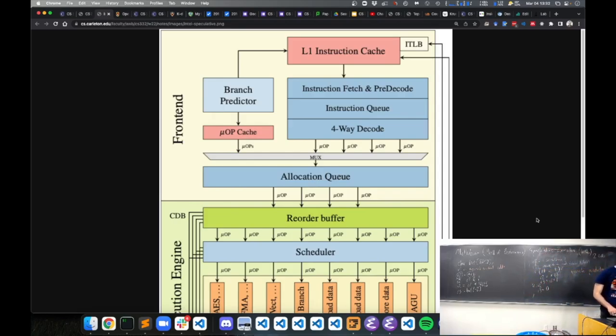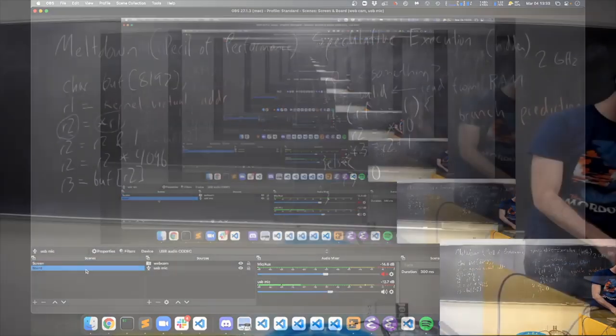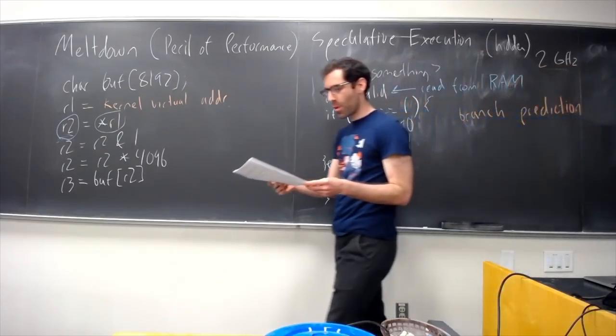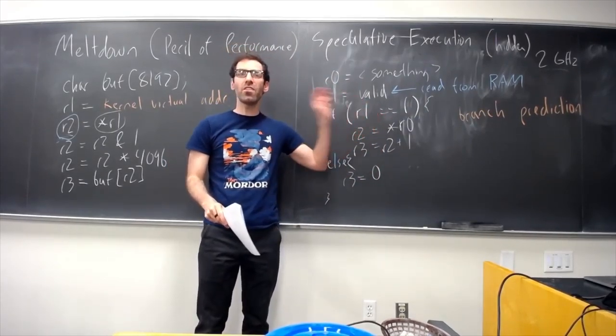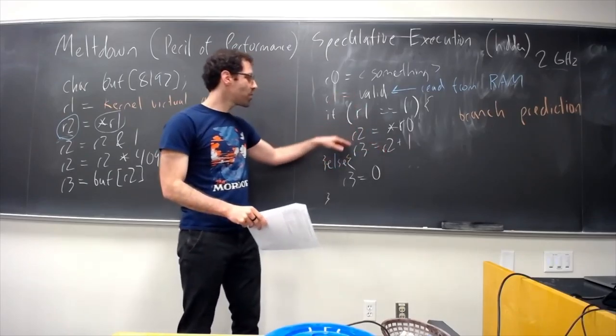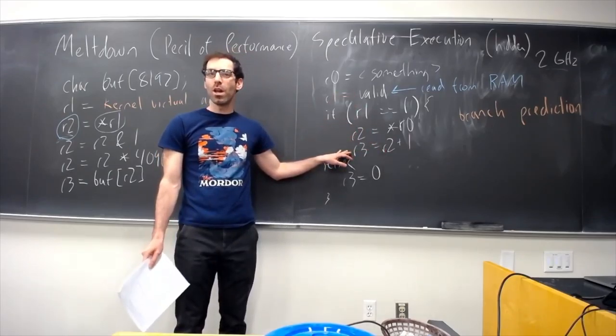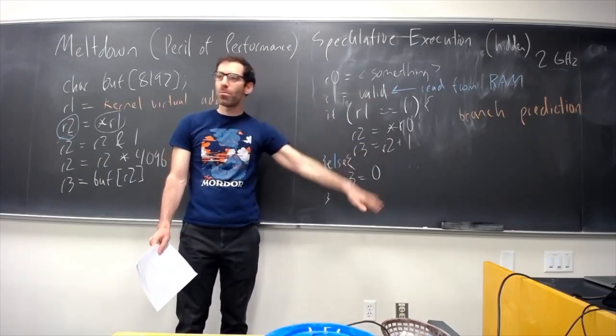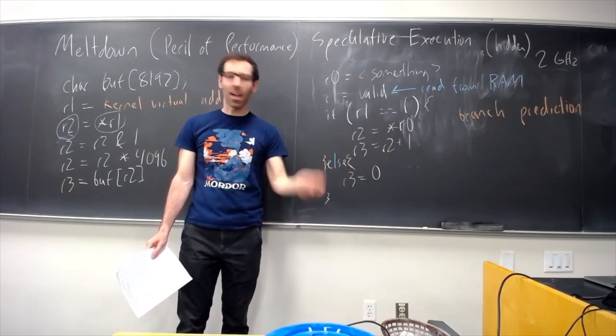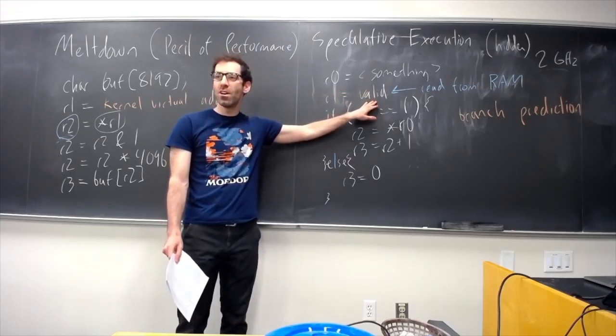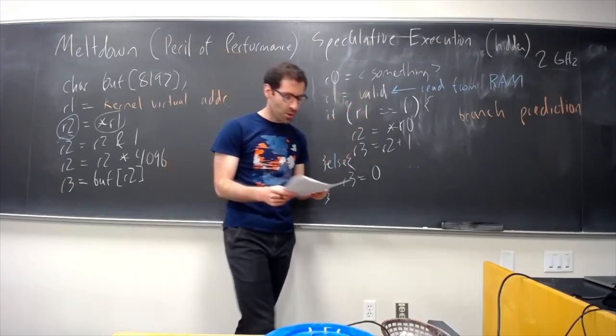All right. Okay, so doing this speculative execution is a huge performance benefit. Because if it turns out that we predict right, when this data comes back, we have already run, potentially, hundreds of instructions ahead. And just like, put that into place, we've already done all that work while we were waiting for this. So, huge performance benefit.